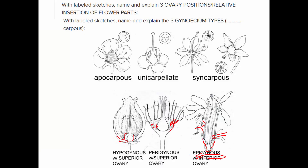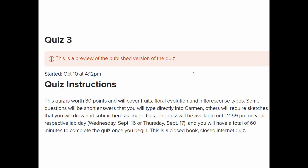We also learned about gynoecium types. Some flowers have several to many separate stigma-style-ovary units, each developing into a fruit — that's called an apocarpous gynoecium. Some flowers have one seed-bearing unit called a carpel — one chamber, one row of seeds — that's unicarpellate. Most flowers have several carpels fused together; if it looks like five, that's called a syncarpous gynoecium — more than one fused carpel.